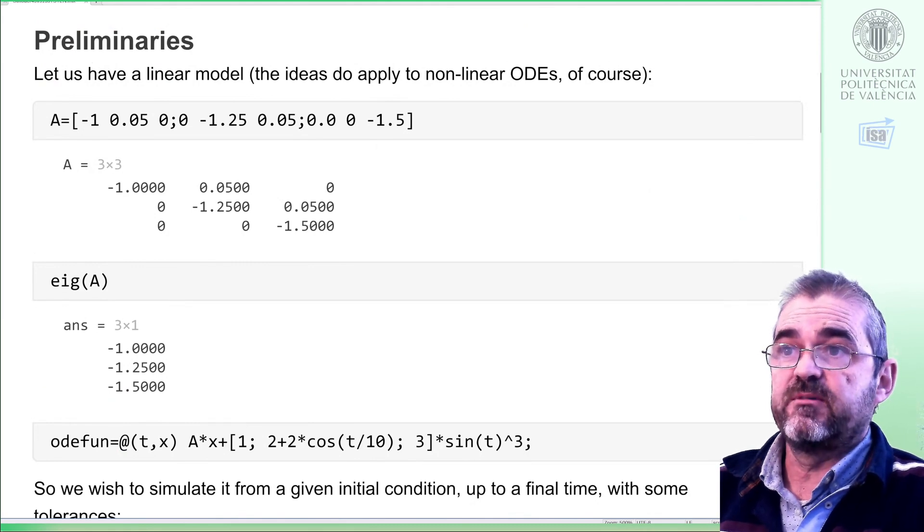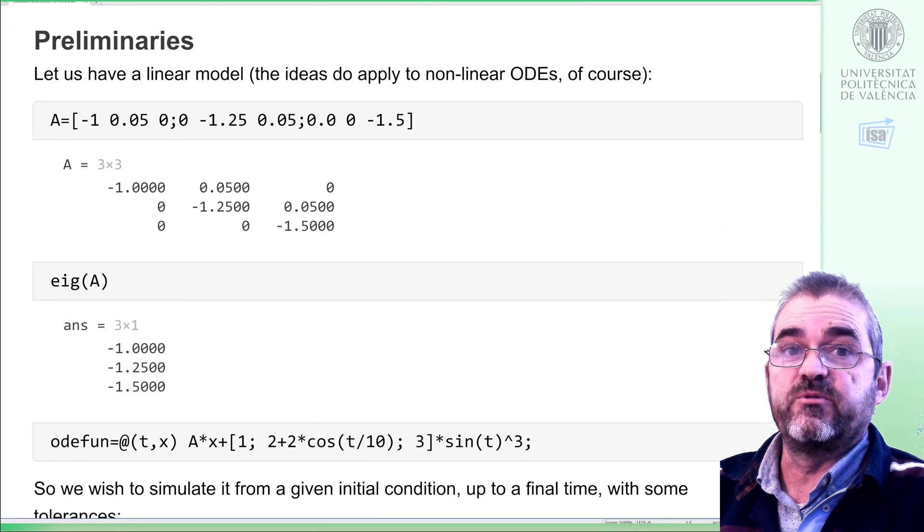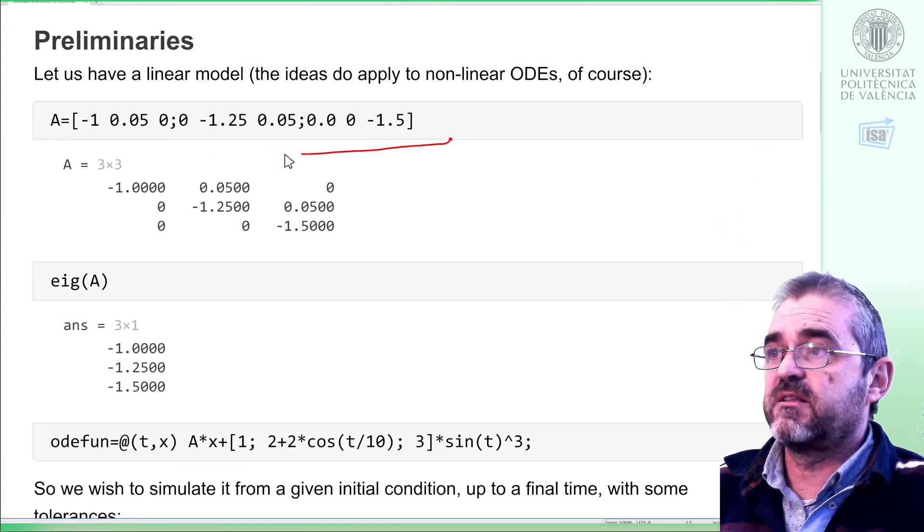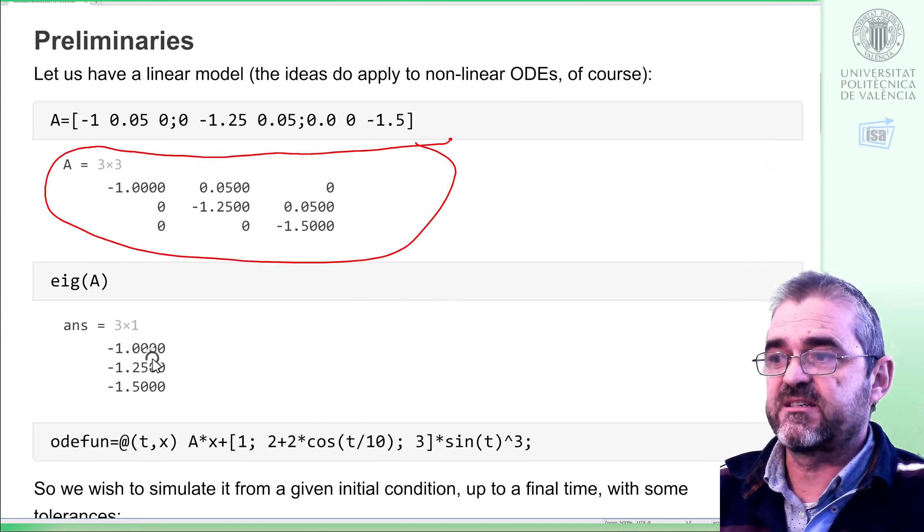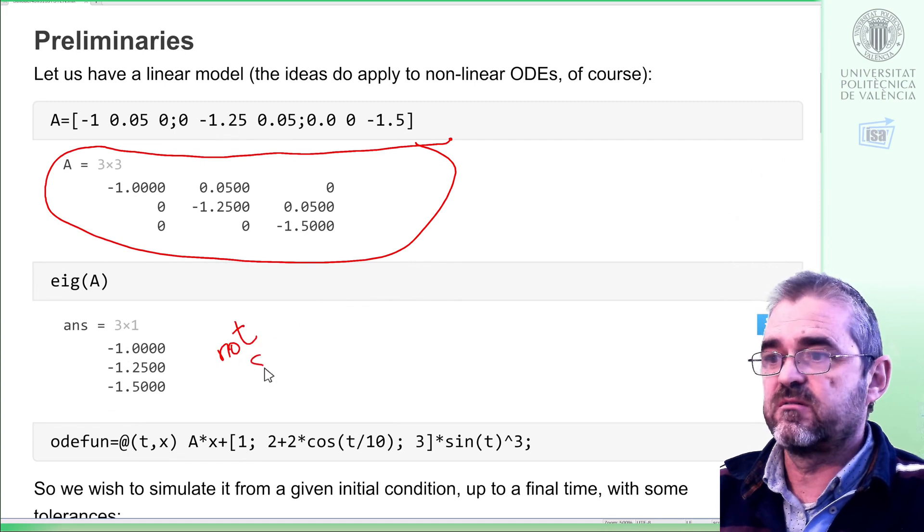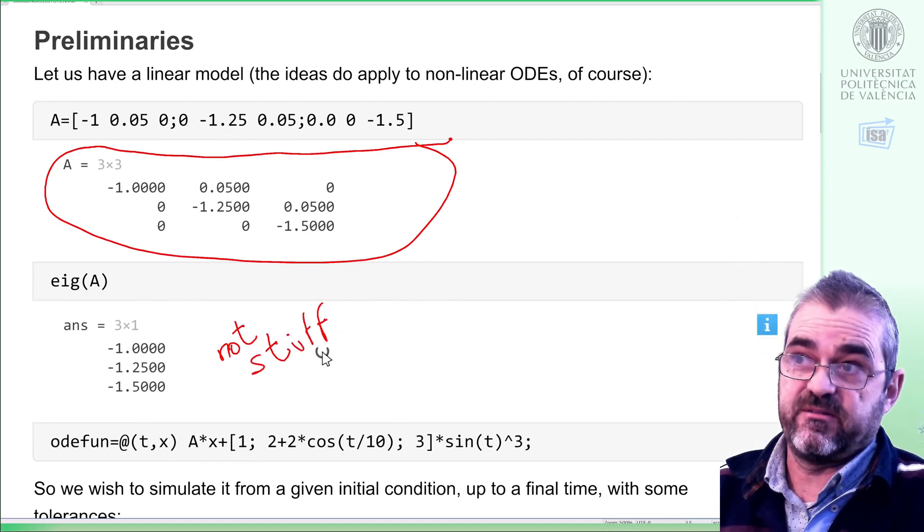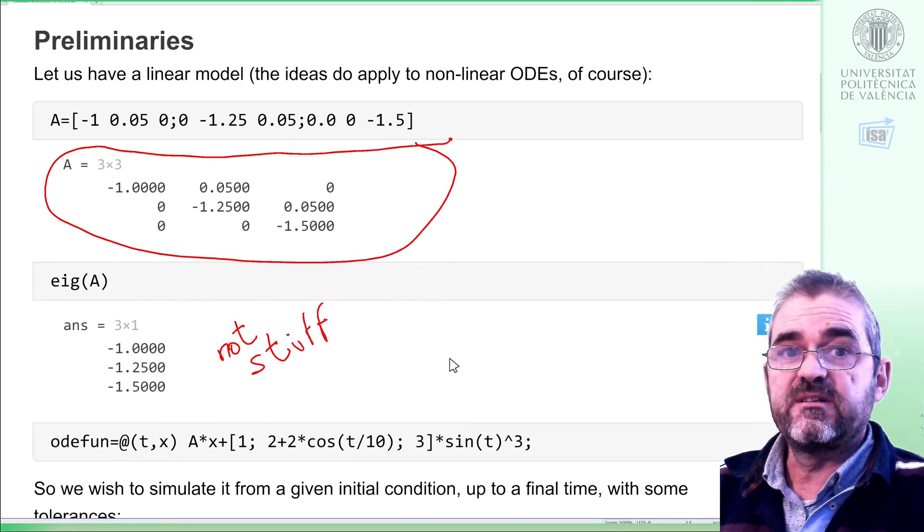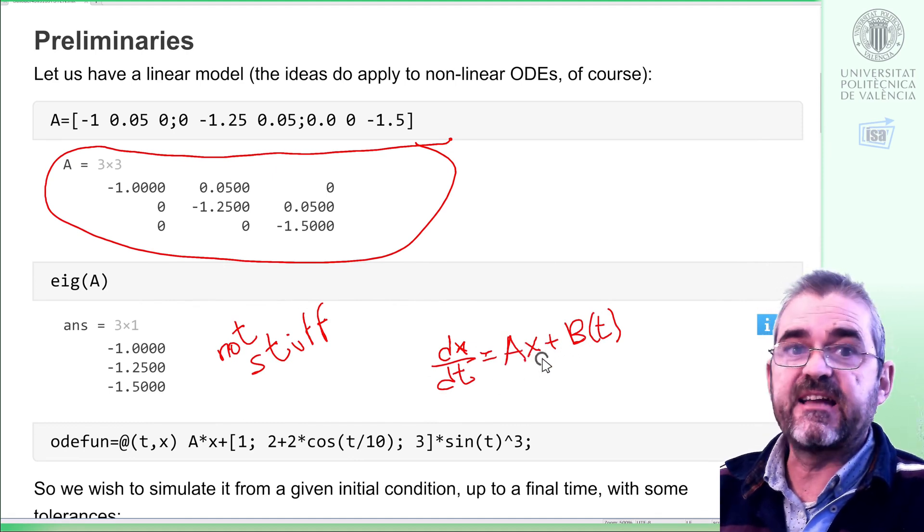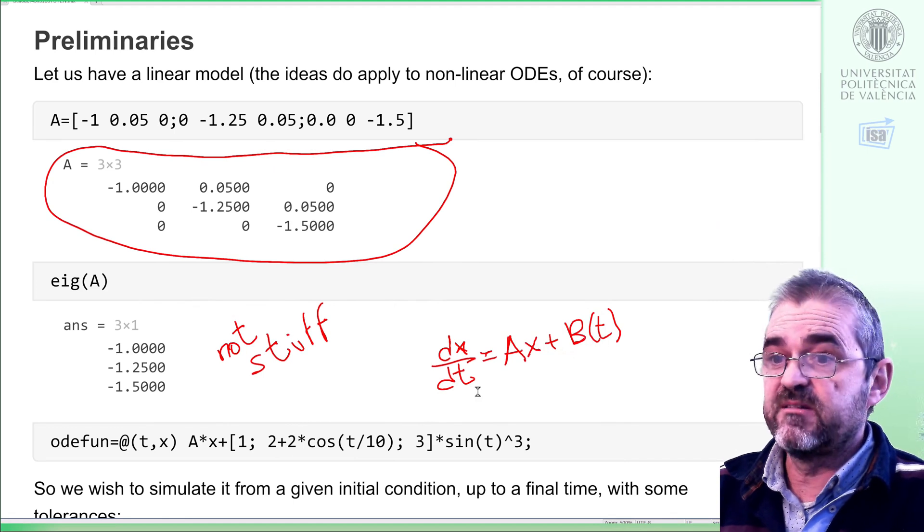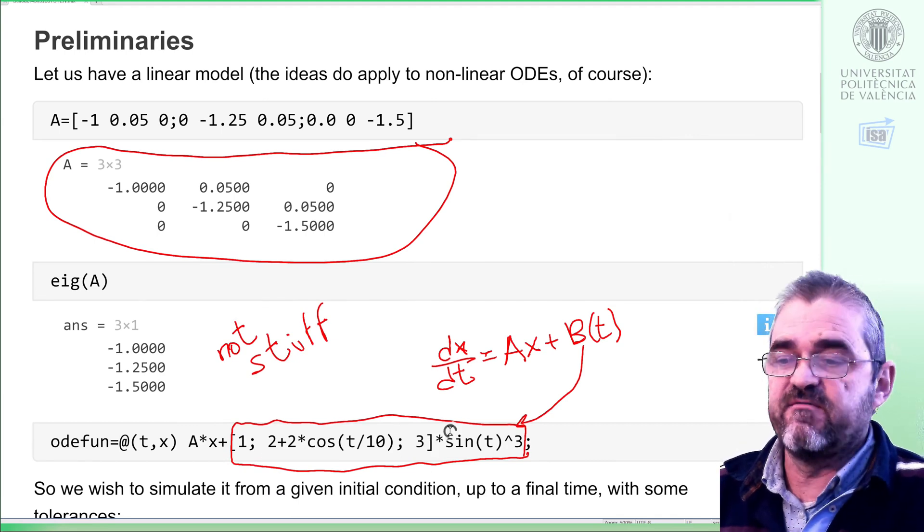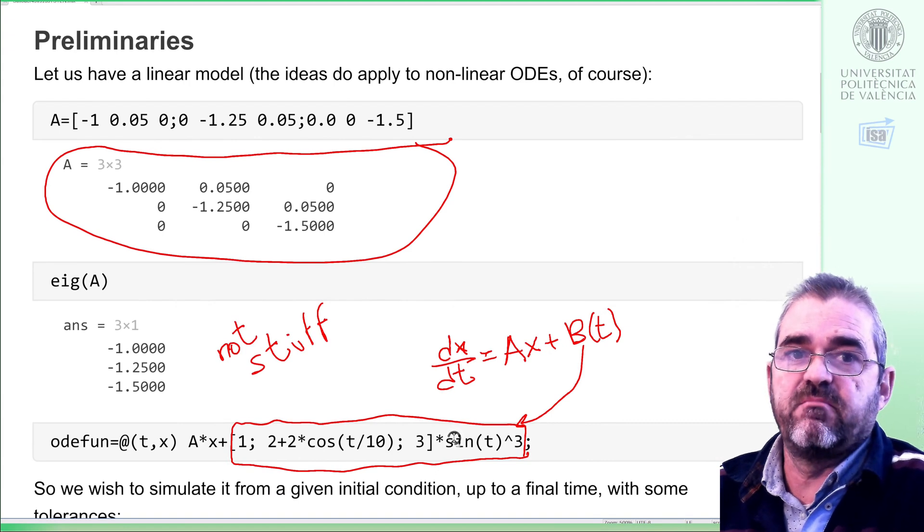Let's discuss the problem we are going to solve. We will solve a linear problem but of course the main ideas here do apply to non-linear differential equations. Let's keep things simple and consider this A matrix which has three poles at minus 1 and minus 1.5. So this will be not stiff, not compared to our second example. The derivative will be Ax, just a linear one, plus some input which will be this b of t, some arbitrary things that go up and down. I just invented them, there is nothing special about this but something to plot.